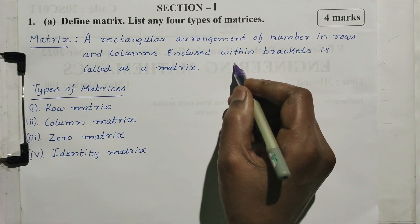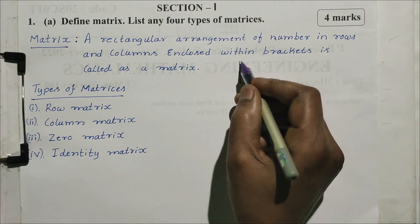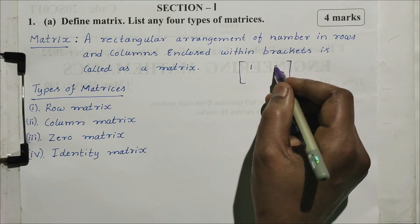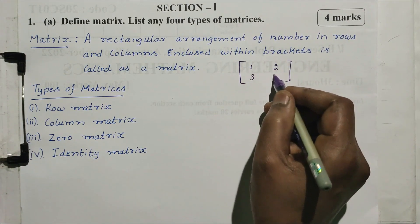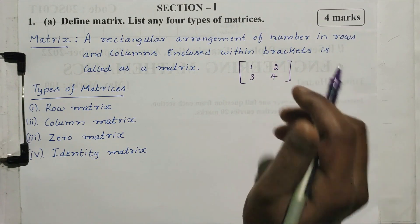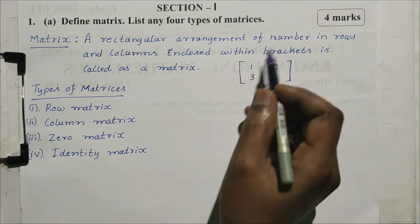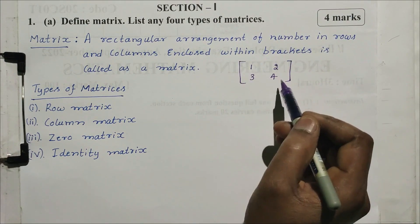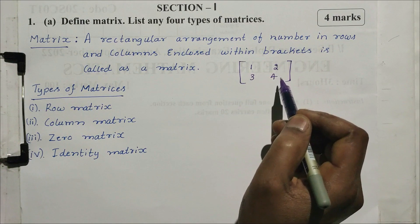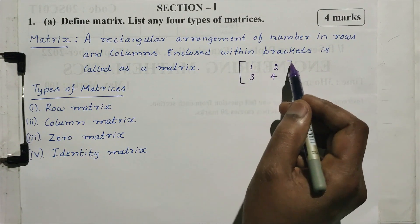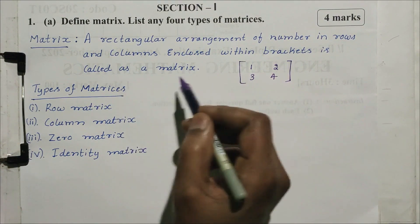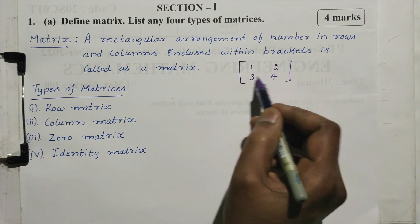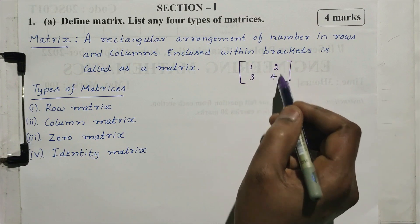So this is the same thing. What examples are these? This is a rectangular arrangement — numbers 1, 2, 3, 4 arranged in rows and columns. This is the rectangle arrangement of numbers in rows and columns, enclosed within brackets, is called a matrix. It is a rectangular arrangement where numbers in rows and columns are arranged.